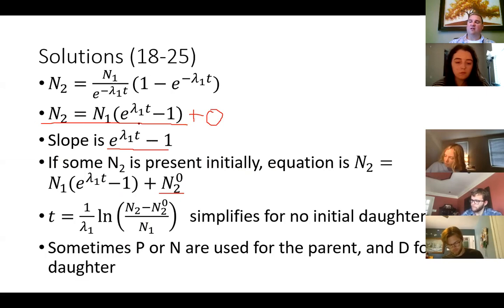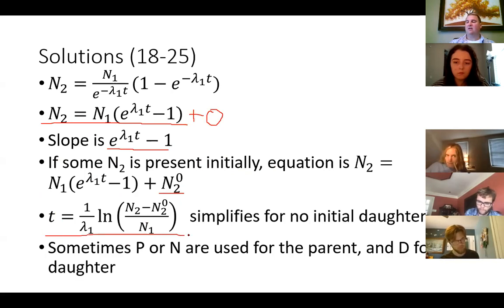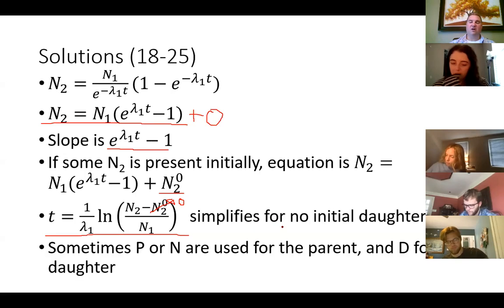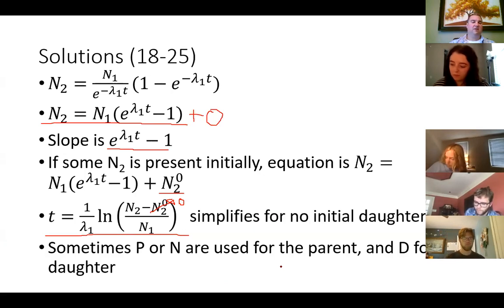If you wanted to solve all of this for the time — so if you have a graph and you're trying to solve for the age of the sample — then that's this equation here. If there is no initial daughter, then the N2-naught term would of course be 0, so that goes away, and you're just looking at the ratio of the daughter and the parent atoms.